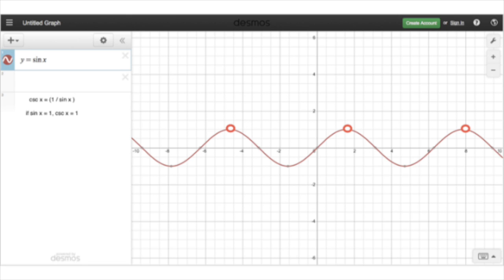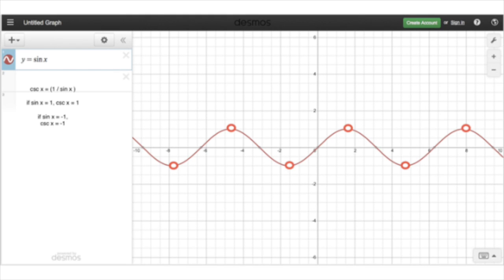Similarly, whenever the sine is negative 1, the reciprocal of that will still be negative 1. So if I'm graphing the cosecant, that's where those two graphs, the sine and the cosecant, are going to touch each other.